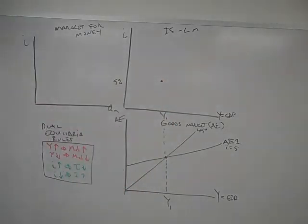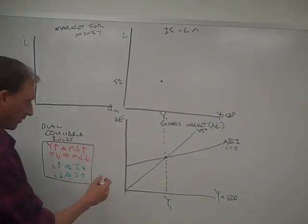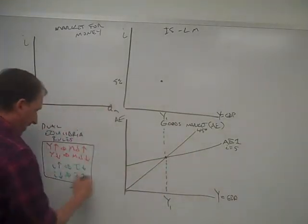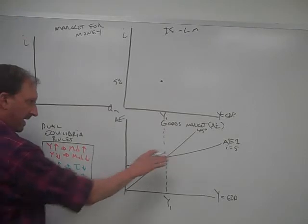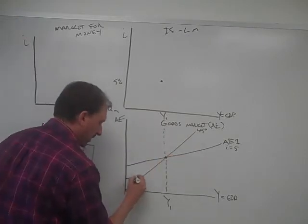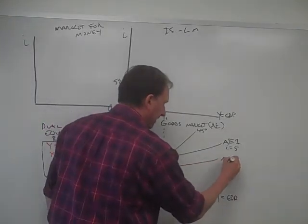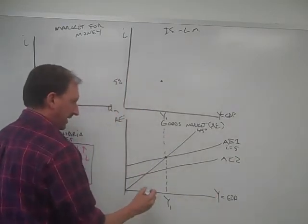If something were to happen and interest rates were to go up, well then, when interest rates went up, then investment would go down and AE would drop. So AE goes from here to here. We go maybe to AE2.